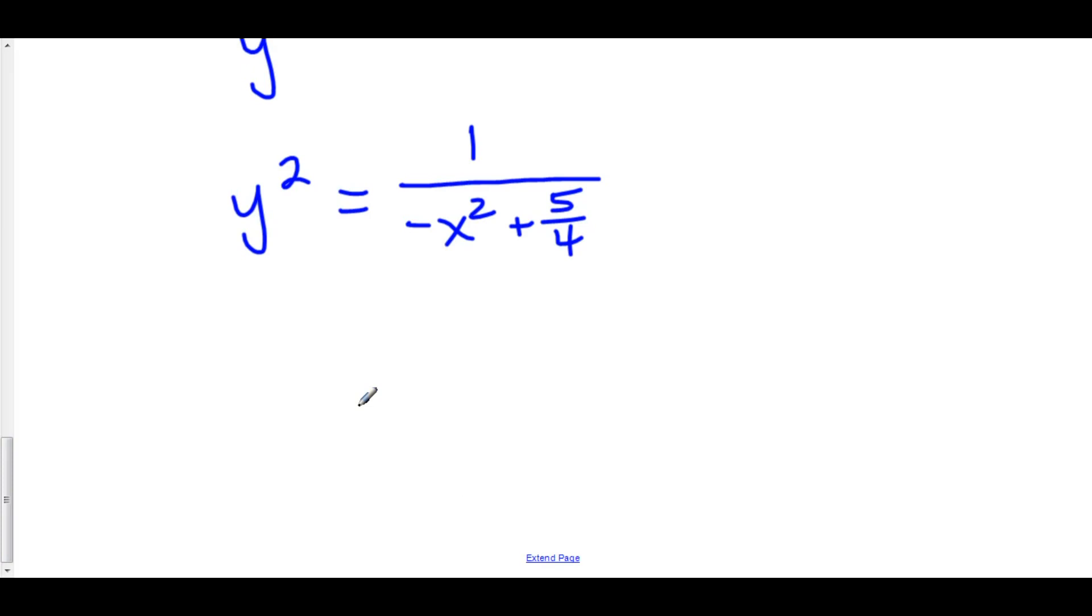At this point we can now take the square root of both sides to get rid of the square. However, if we do the square root of the right hand side we need to include a plus or minus by our rules of quadratics. However, often times this doesn't actually work out the way that we want it to. So here we have y is equal to plus or minus the square root of 1 over negative x squared plus 5 over 4.